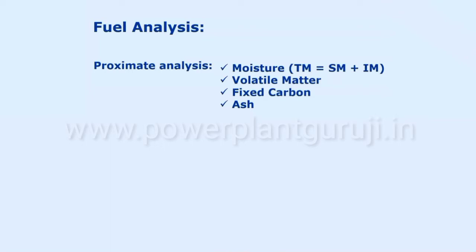Then it is heated without air, without oxygen, up to a temperature of around 900°C, and the loss of weight contributes to the volatile matter. Then it is heated in the presence of air and combustion takes place. What remains is ash, and the loss of weight contributes to the fixed carbon component.